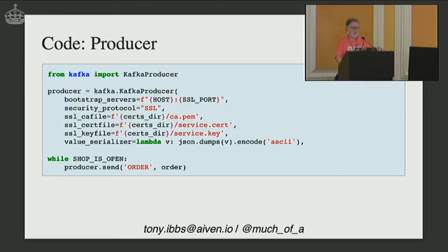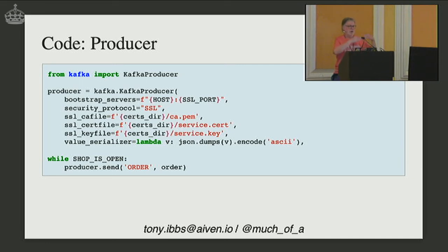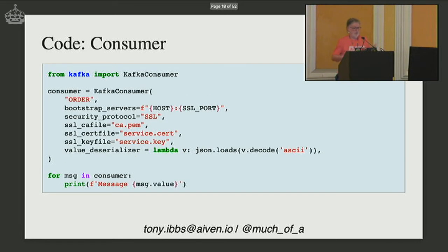In Kafka Python synchronous code: import a Kafka producer, tell it the host and port, pass in SSL certificates, and specify how to serialize values — Kafka is byte-oriented so we turn JSON into bytes. Then loop while the shop is open and send to the order topic; the producer names which topic it wants to write to. Consuming is similar: import the Kafka consumer, specify the topic, set host and SSL details, add a deserializer to turn bytes back into JSON, and loop over the consumer to get messages.